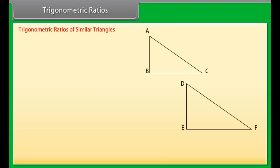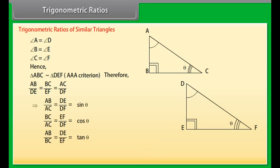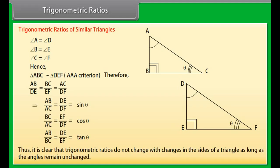Trigonometric ratios of similar triangles. Consider two triangles, triangle ABC and triangle DEF. Angle A equals angle D, angle B equals angle E, and angle C equals angle F. Hence, triangle ABC is similar to triangle DEF by the AAA criterion of similarity. Therefore, the corresponding sides of the two triangles are proportional. Thus, trigonometric ratios do not change with changes in the sides of a triangle, as long as the angles remain unchanged.